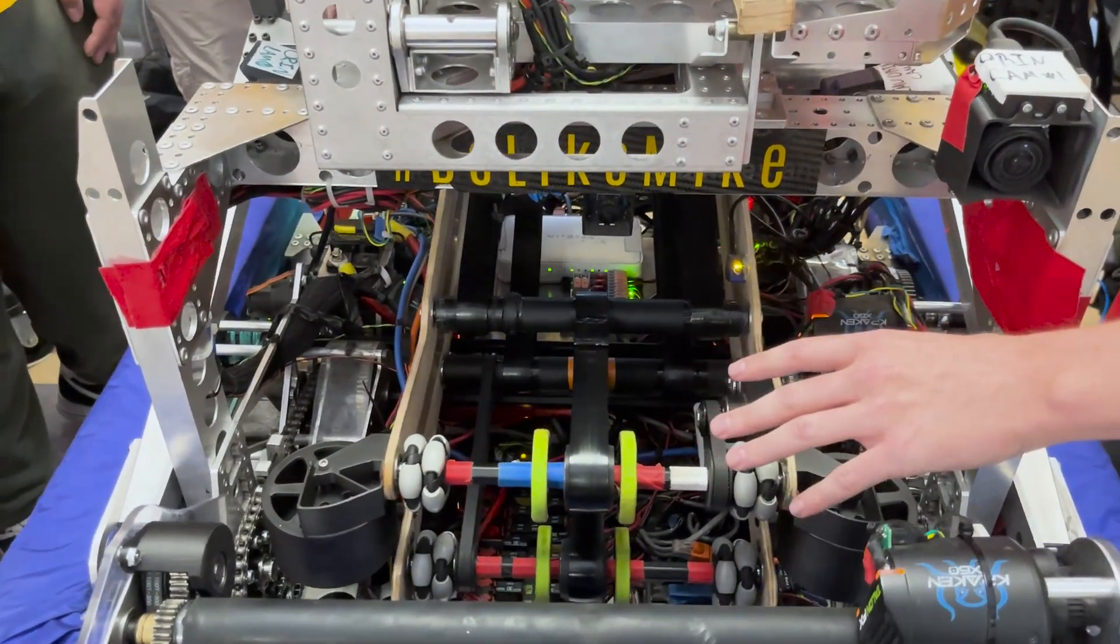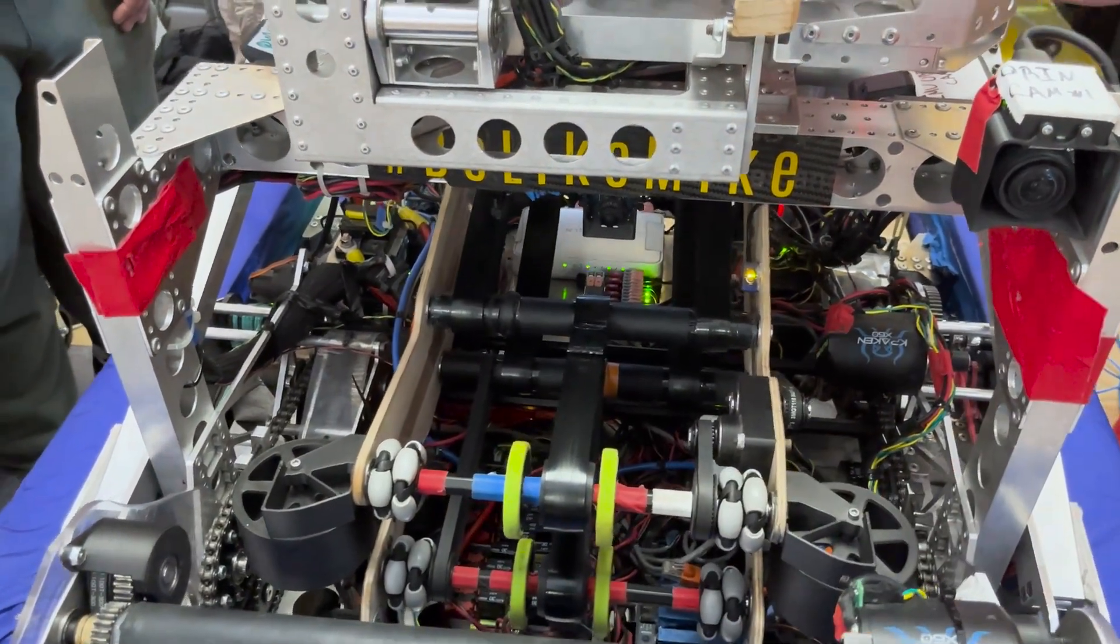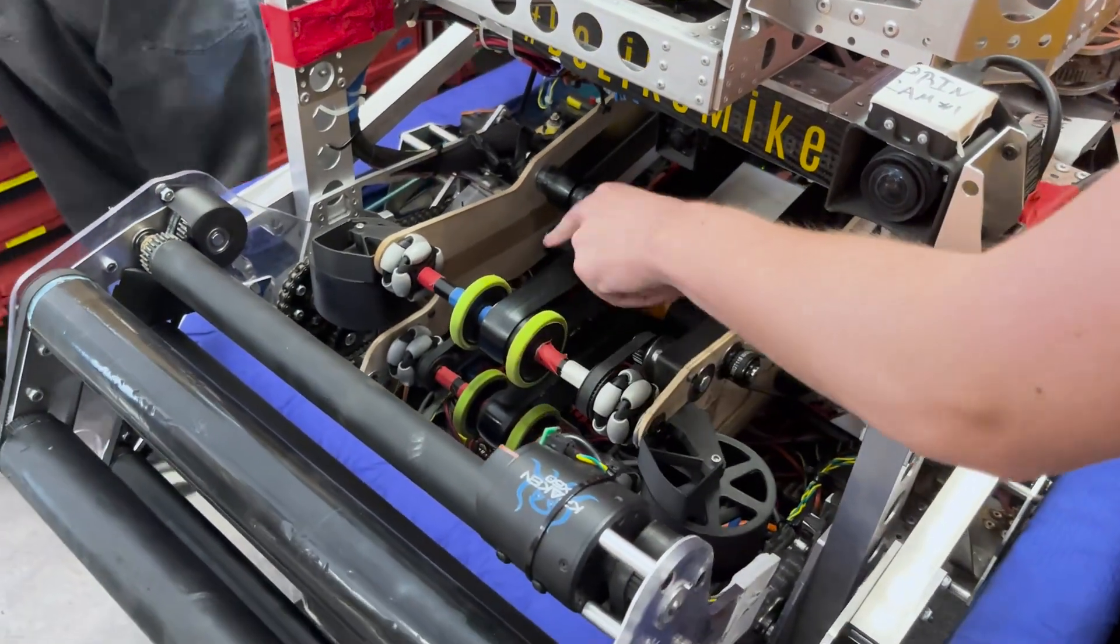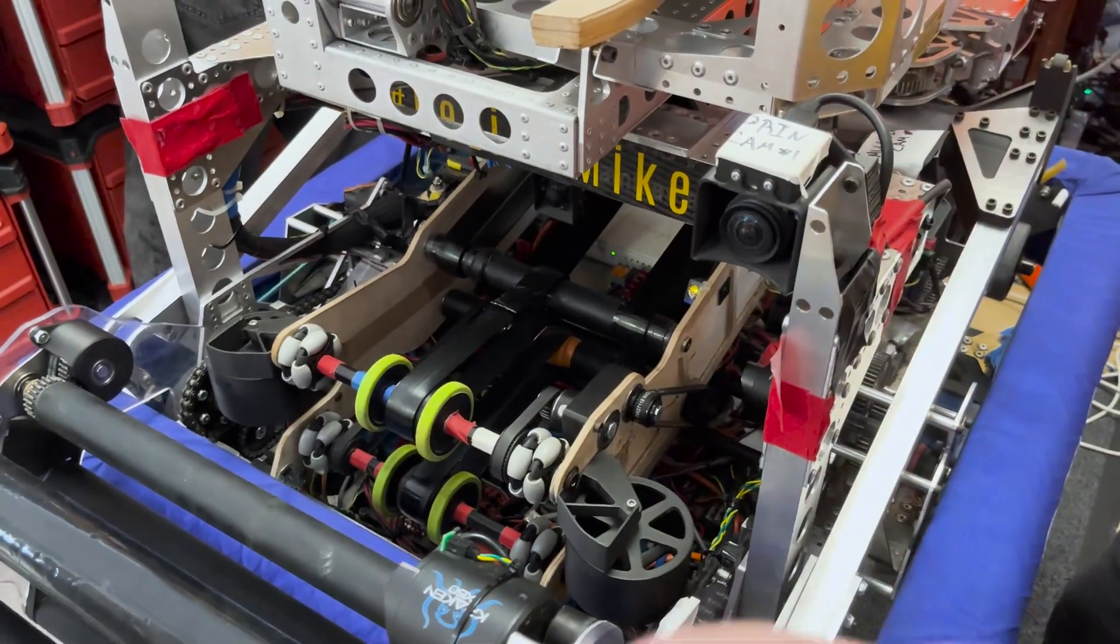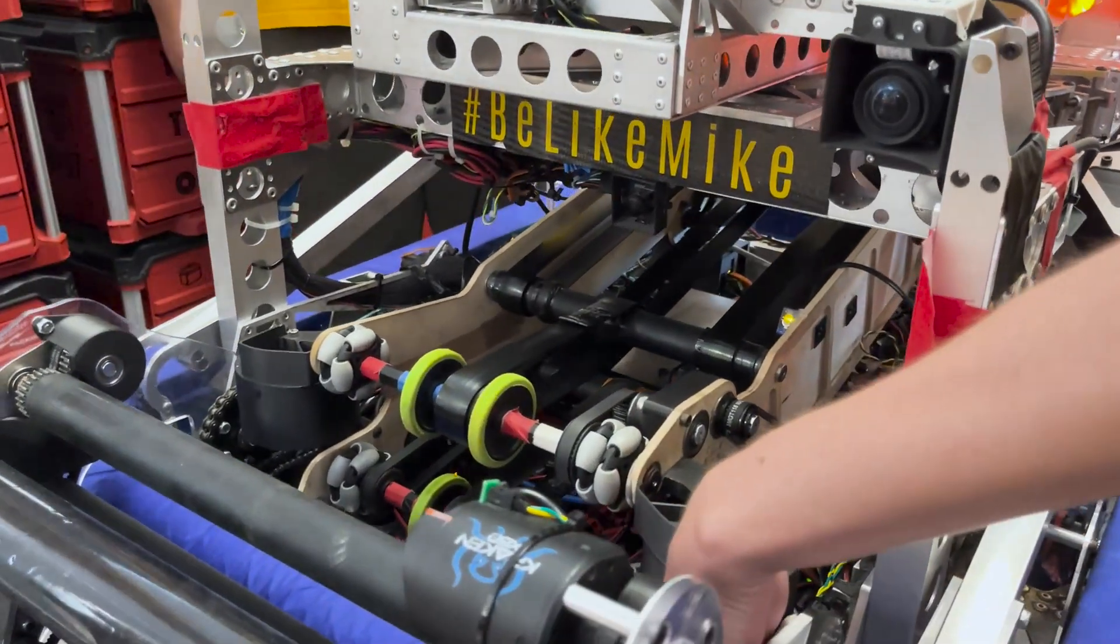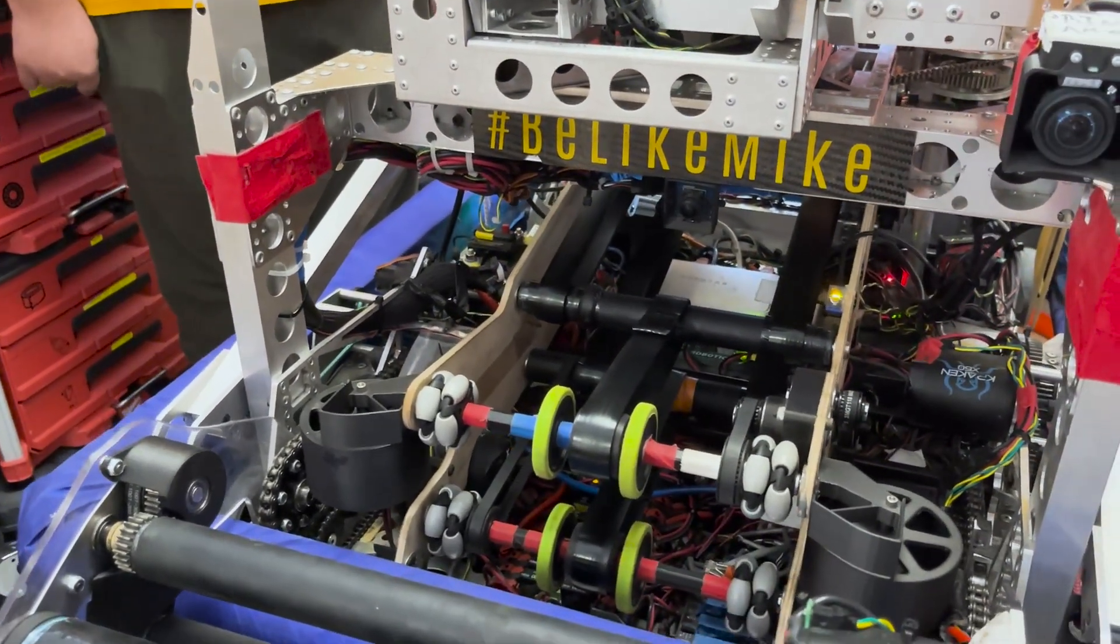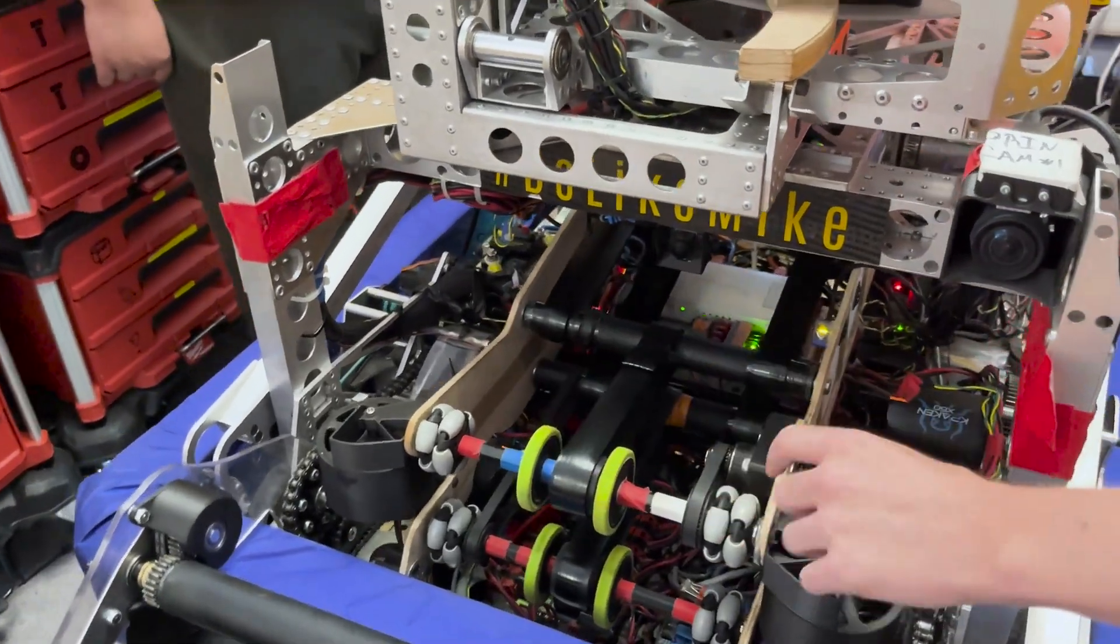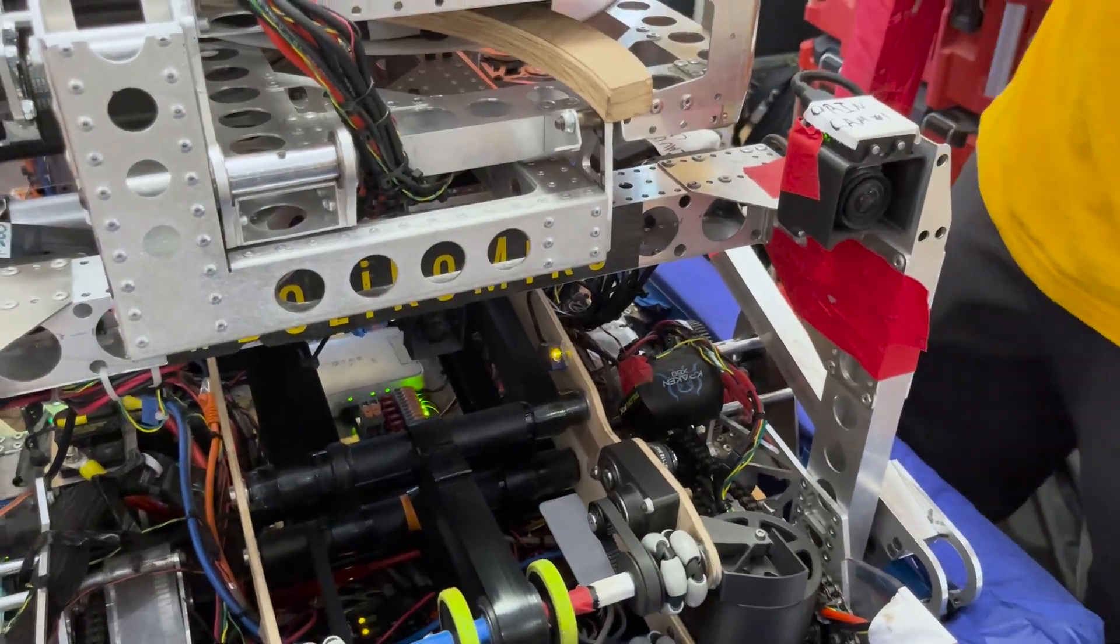So moving on, we have the transfer rollers. What these do is move the note from the intake through the robot to the other side. It's just a bunch of these rollers here with these belts and the same hubs as the intake. We tried to standardize all the hubs throughout the whole robot. It has these bolt fixtures here on all the sides, so we can just unscrew it and take this whole thing out whenever needed. It's protecting inside the robot, we used wood, and it never broke.